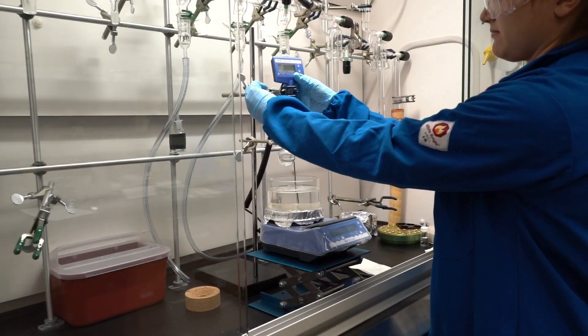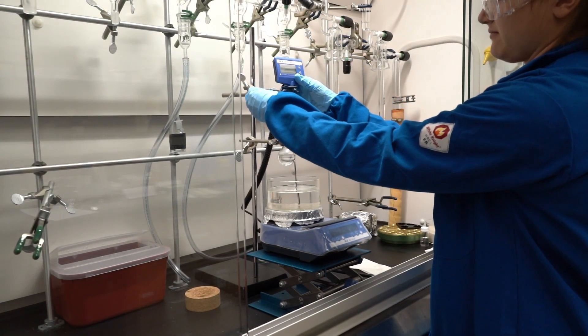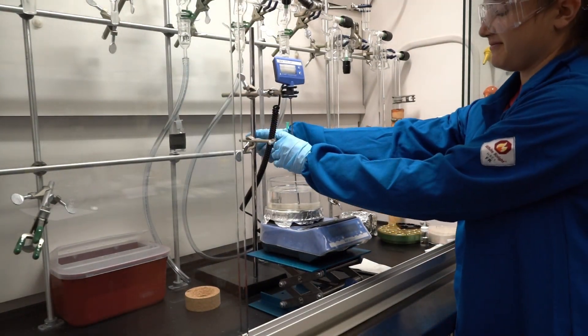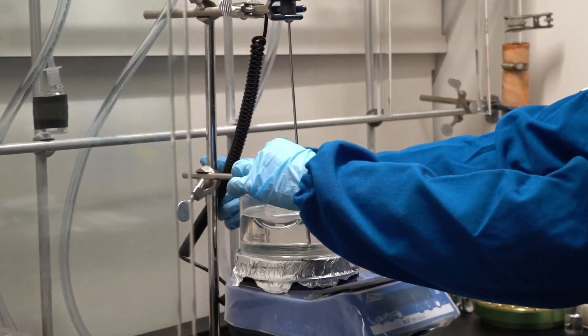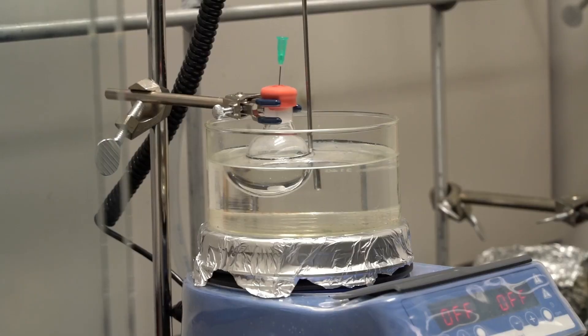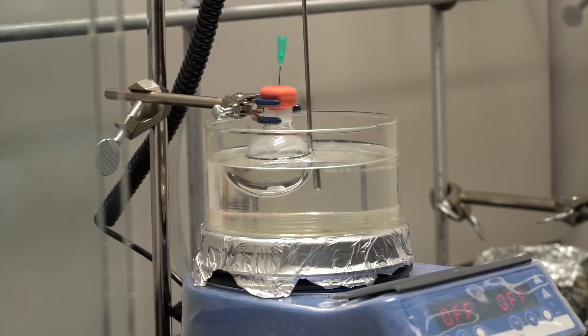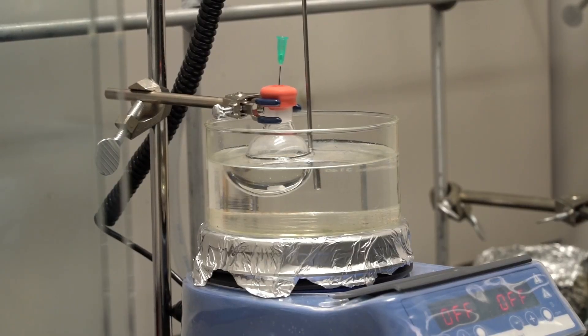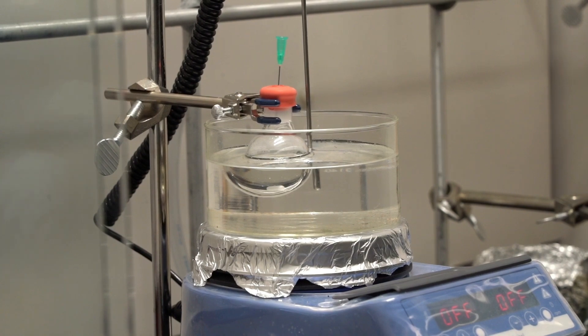Adjust the height of the clamps and the lab jack to submerge both the flask and thermometer. The thermometer tip should be at the same vertical level as your reaction flask, or at least as close as possible, to ensure an accurate temperature reading.